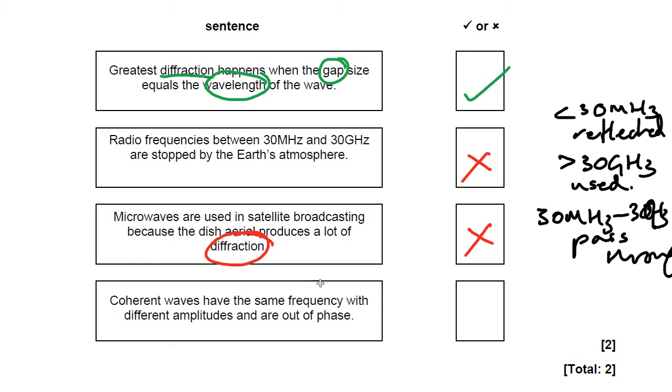Well, they do have the same frequency, but they don't have different amplitudes. They have the same amplitudes and they are in phase. So this statement altogether is false. You just need to remember, coherent waves have the same frequency, the same amplitude and are in phase.